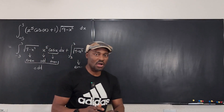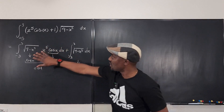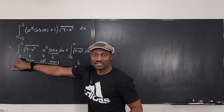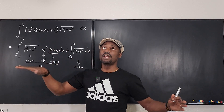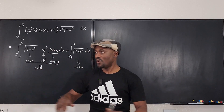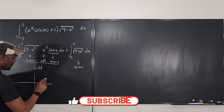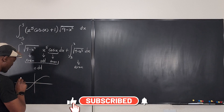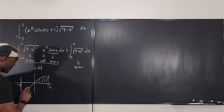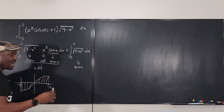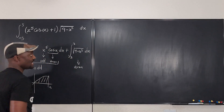Because it's an odd function, we don't need to do any integration for the first part, since the boundary is symmetric. When you plot the graph of this function going from minus three to plus three, the area on one side is the same as the area on the other side, and both of them cancel each other out. So this first integral is absolutely zero.